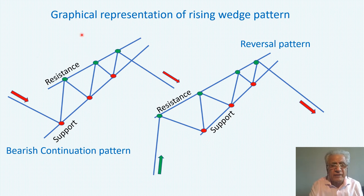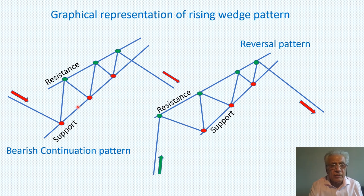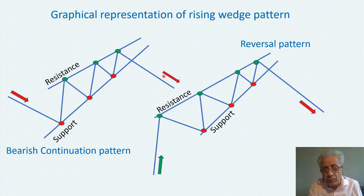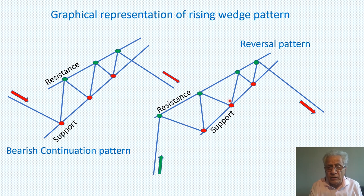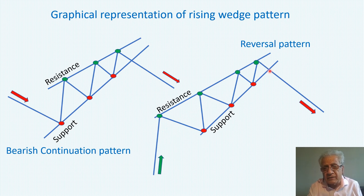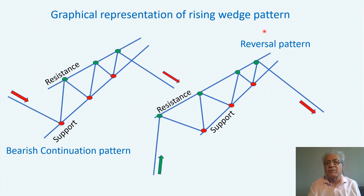Now we have two patterns. One of them is a continuation pattern — the rising wedge is in a downward trend and it ends up continuing downward. The other is when the rising wedge is in an upward trend, and after that it breaks the support and goes downward, making a reversal pattern.